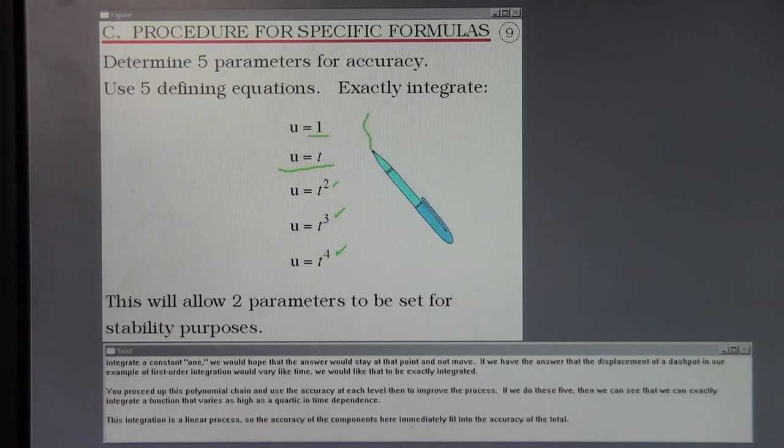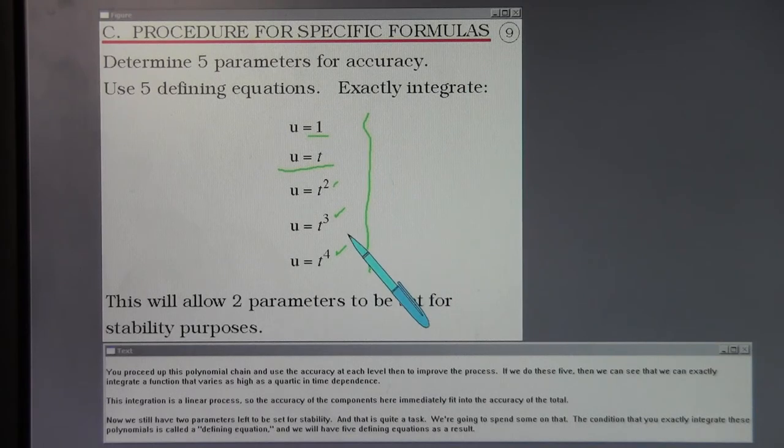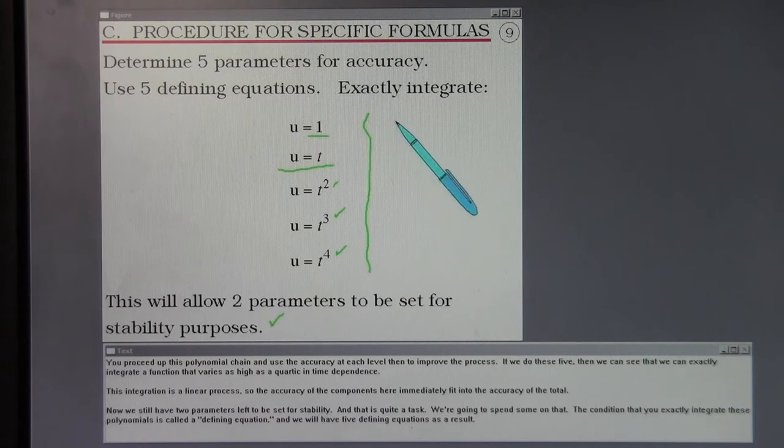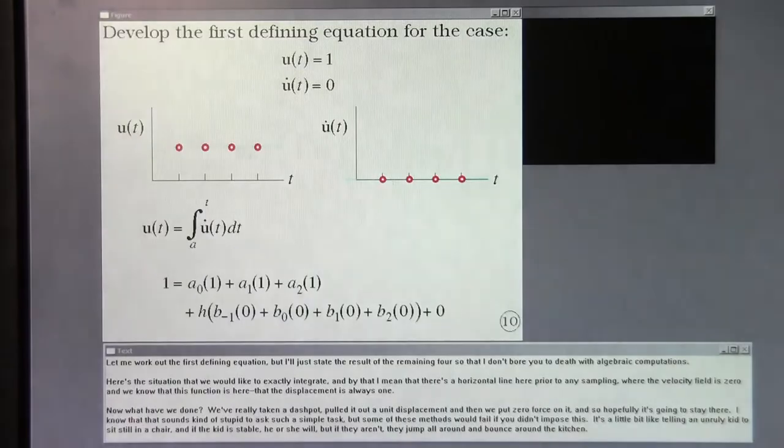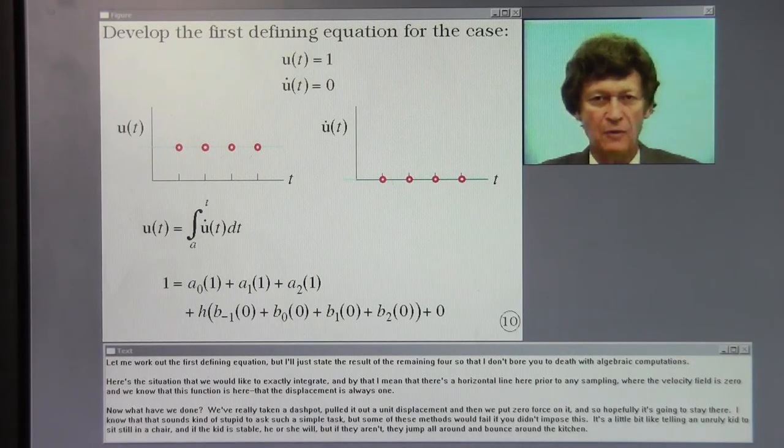You proceed up this polynomial chain and use the accuracy at each level then to improve the process. If we do these five then we can see that we can exactly integrate a function that varies as high as a quartic in time dependence. This integration is a linear process and so the accuracy of the components here immediately fit into the accuracy of the total. Now we still have two parameters left to be set for stability and that is quite a task. The condition that you exactly integrate these polynomials is called a defining equation and we will have five defining equations as a result.